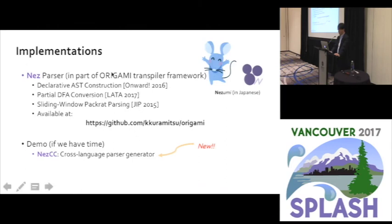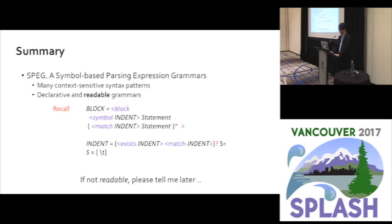Finally, regarding implementation: SPEG is implemented with Nez parser, which is part of the Polyamide transpiler framework. It includes declarative AST construction, partial DFA conversion, and sliding-window-based packrat parsing, and is available on GitHub. In conclusion, I have presented SPEG, a symbol-based parsing expression grammar. It recognizes many context-sensitive syntax patterns, and it produces declarative and readable grammars. Thank you.